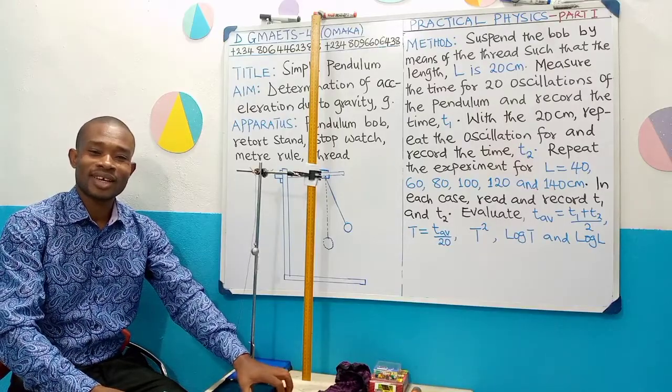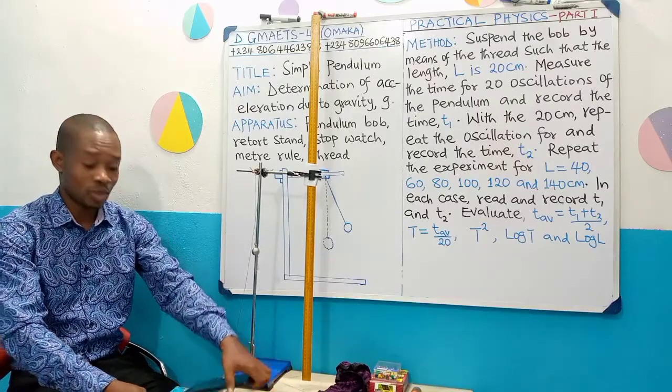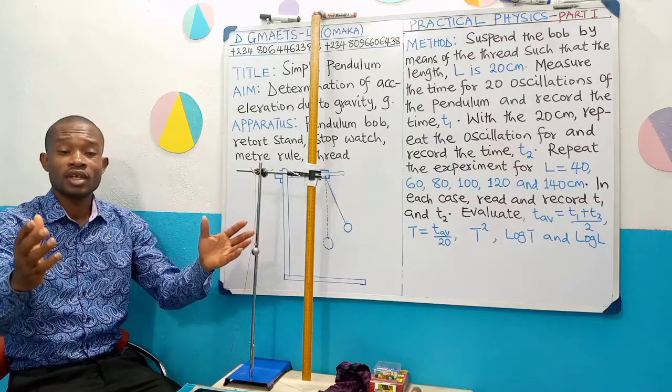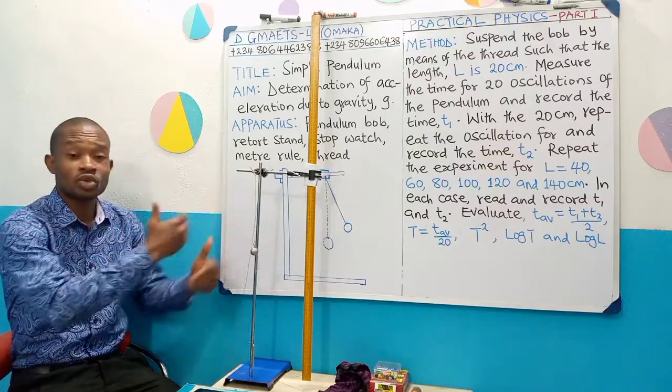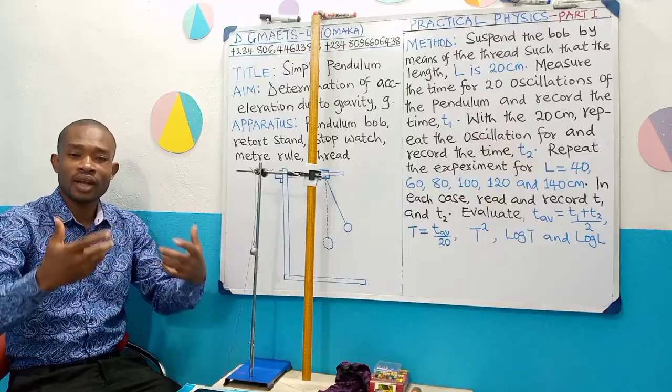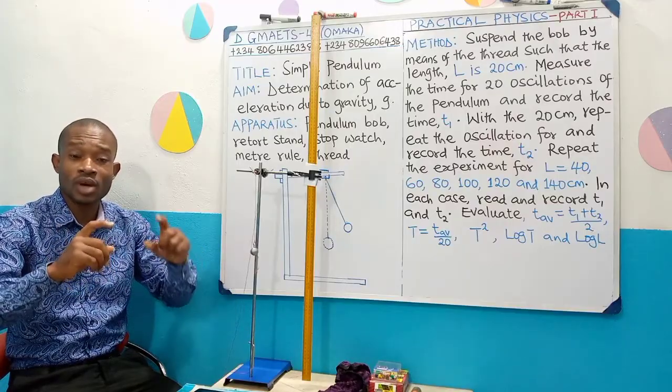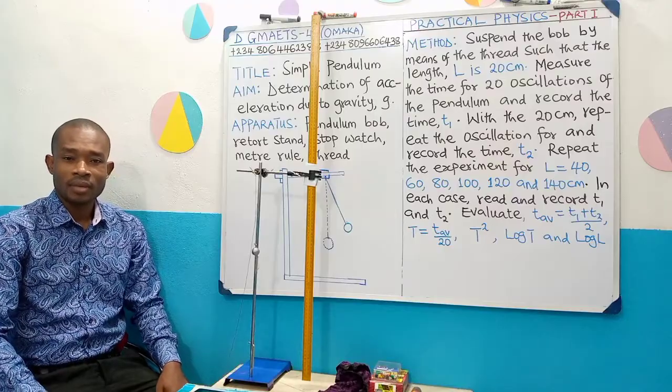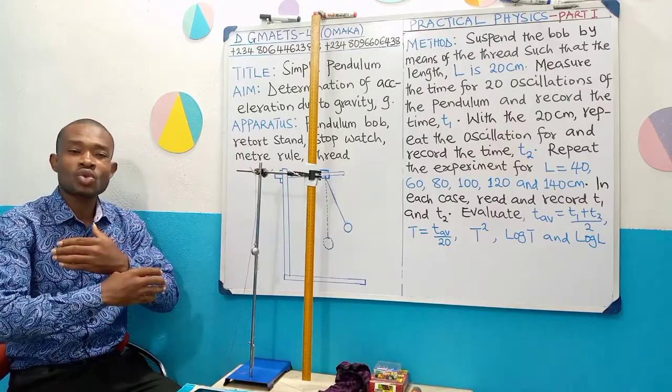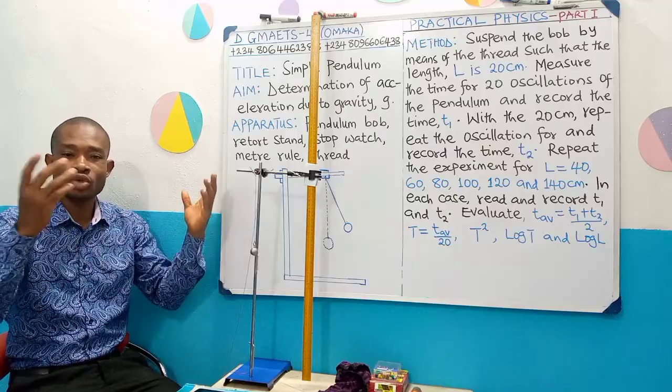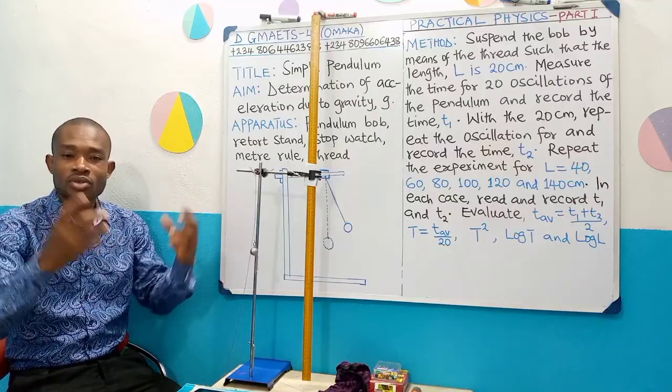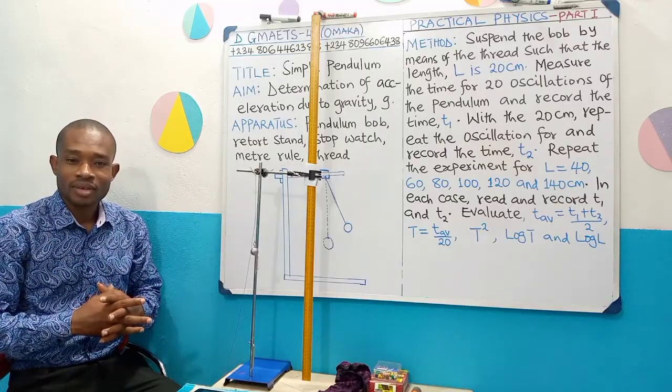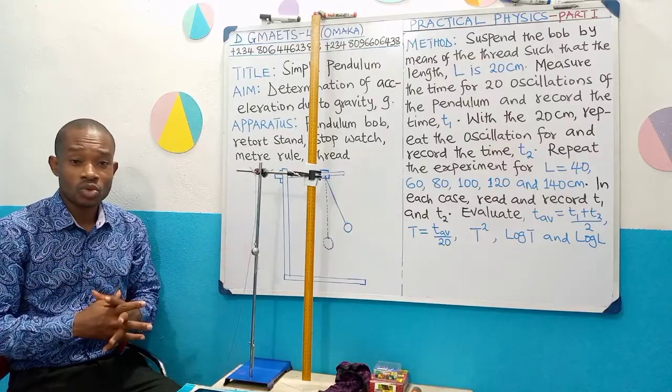Now the instruction for this experiment has been drawn from this manual, which is actually used by 100 level university students. However, take note that the principle behind the experiment is the same. Even in WAEC, this is a likely exam question on simple harmonic motion. So what we're going to do here is relevant to all students, secondary and higher institution, irrespective of your school.